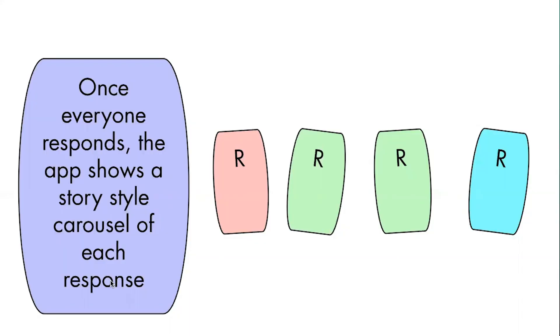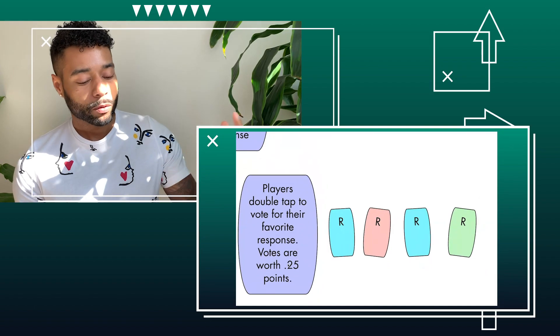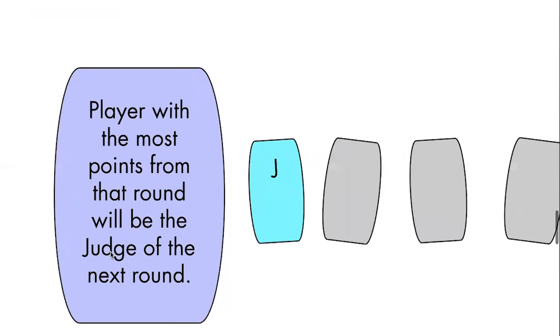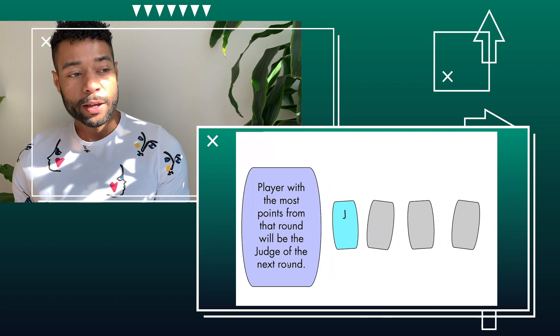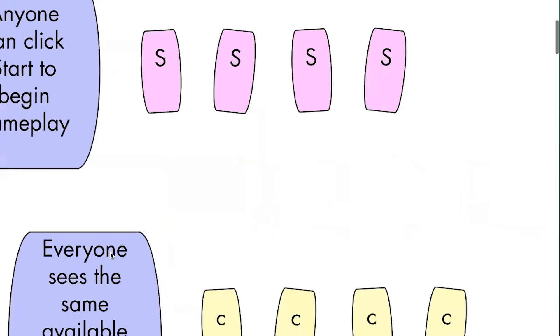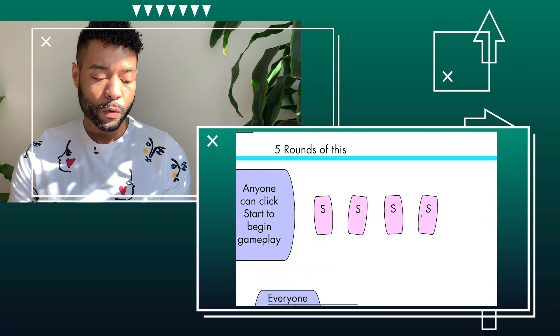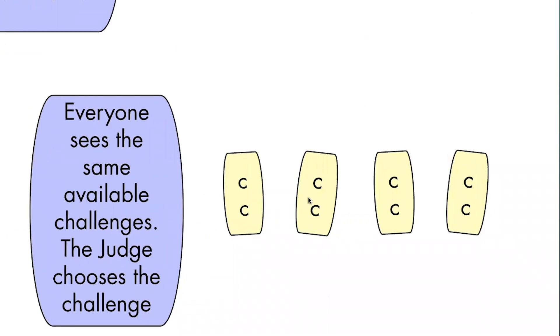People can vote on which response they think is the funniest — players can double tap or whatever that interaction is to vote for their favorite response. Votes are worth 0.25 points. The player with the most points from that round is the winner, and the winner gets to be the judge of the next round. The benefit of being the judge is you get to choose the challenge that everyone competes against. On the first round, the judge is chosen randomly because nobody has won yet, and then the winner of each round becomes the judge.